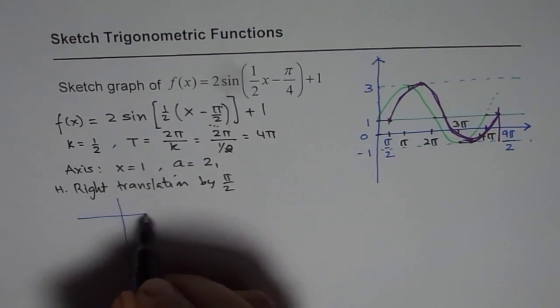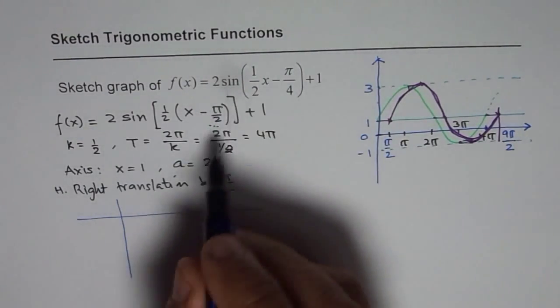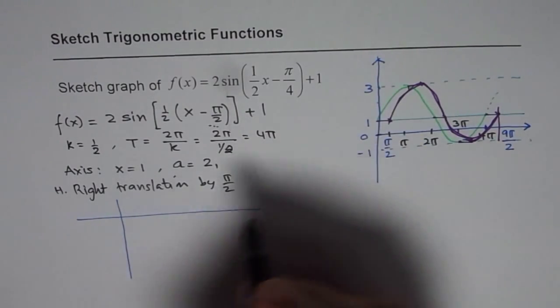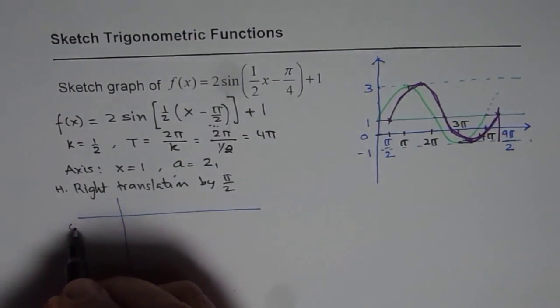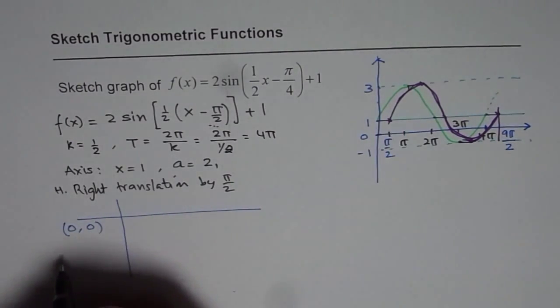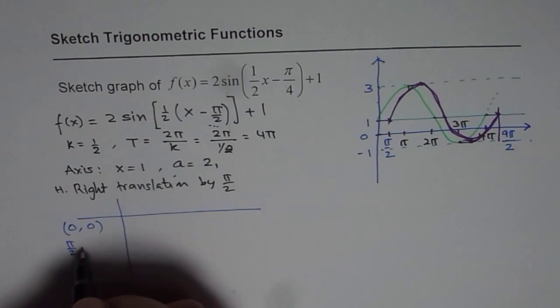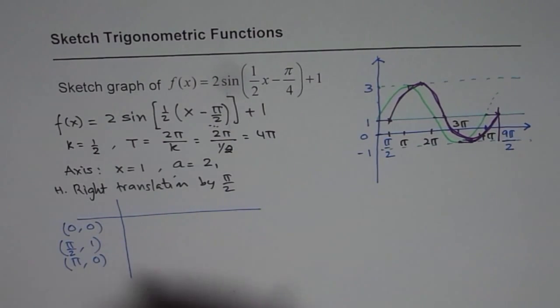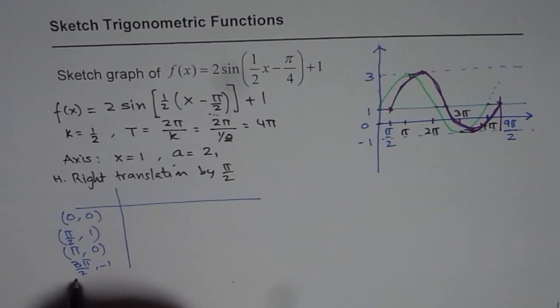Start with the critical values. For example in a sine function the critical values which we look into are zero, and zero to start with. And then we look for pi by 2, it is one. At pi it is zero. 3 pi by 2 is minus one. And at 2 pi it is again zero. So these are the normal values.